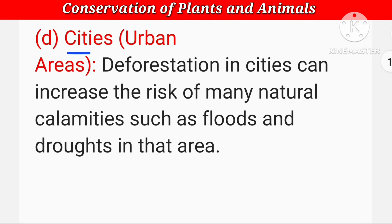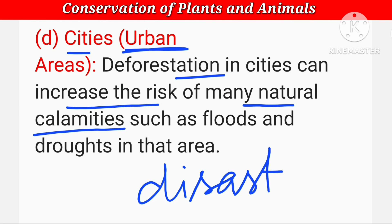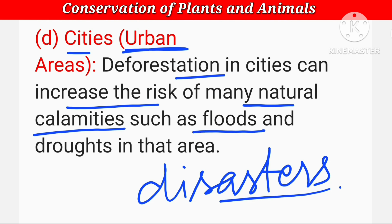Cities — urban areas — पर deforestation का क्या फर्क पड़ता है। Deforestation in cities can increase the risk of many natural calamities — यानि कि प्राकृतिक आपदाओं का खतरा बढ़ जाता है — जैसे कि flood, drought — drought का मतलब सूखा है, बारिश नहीं होती, पानी नहीं होता।